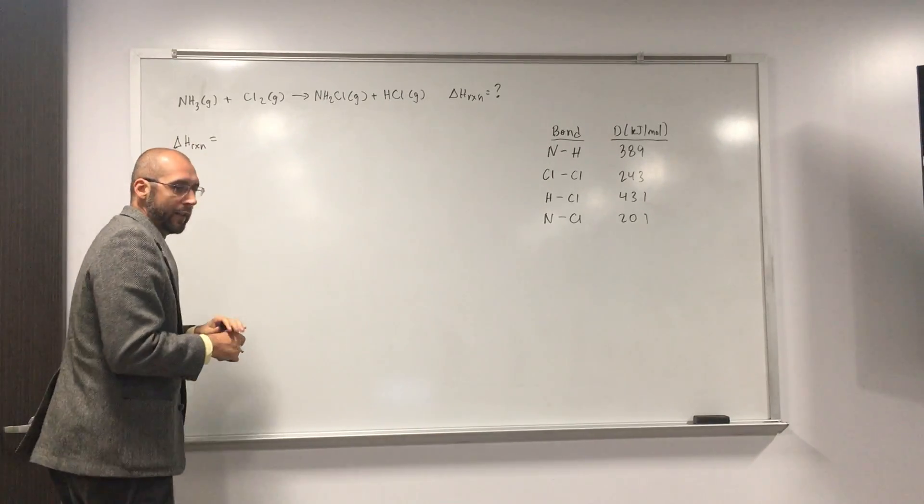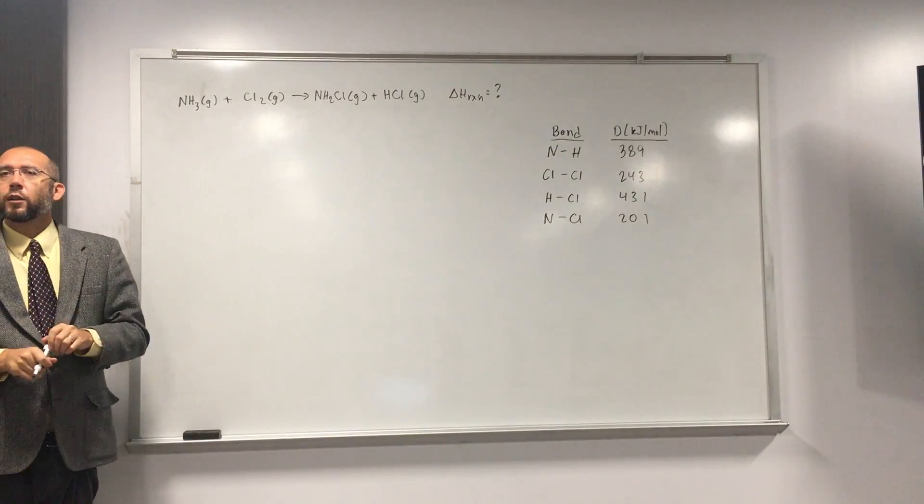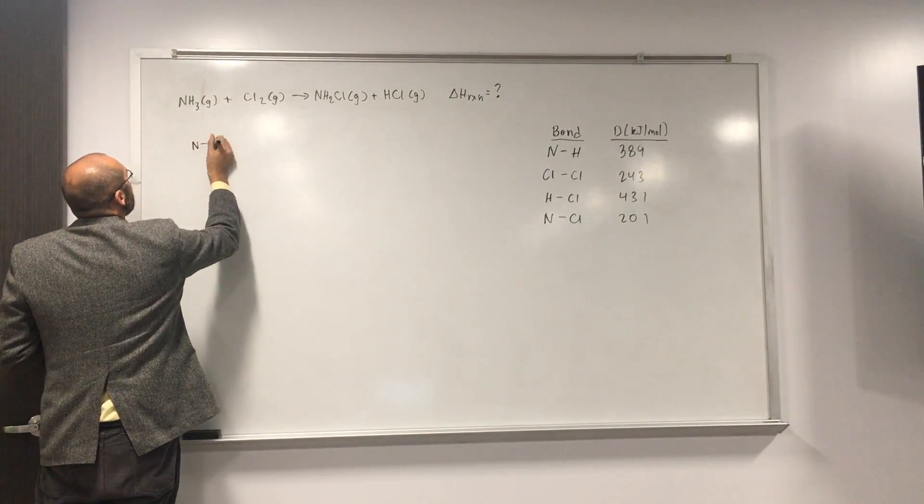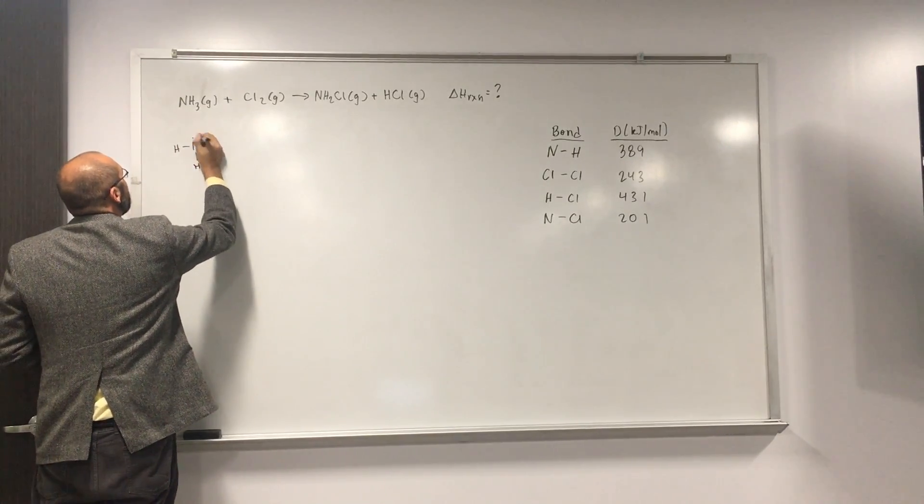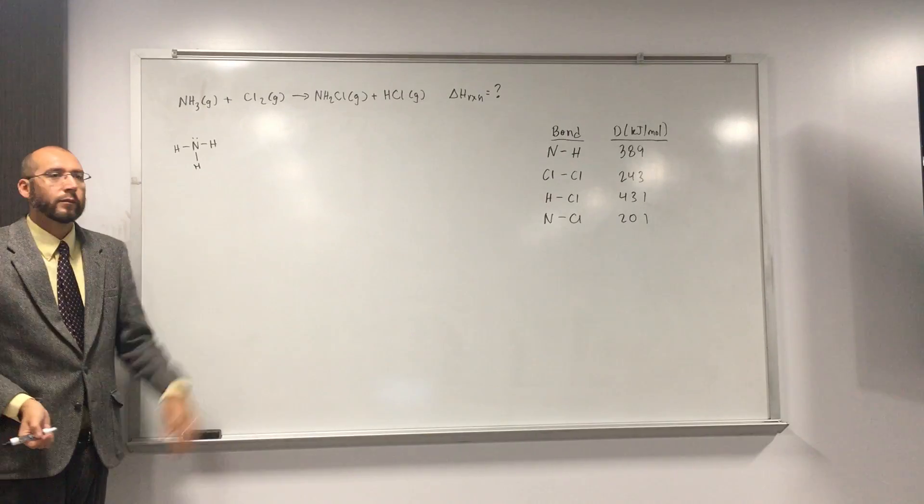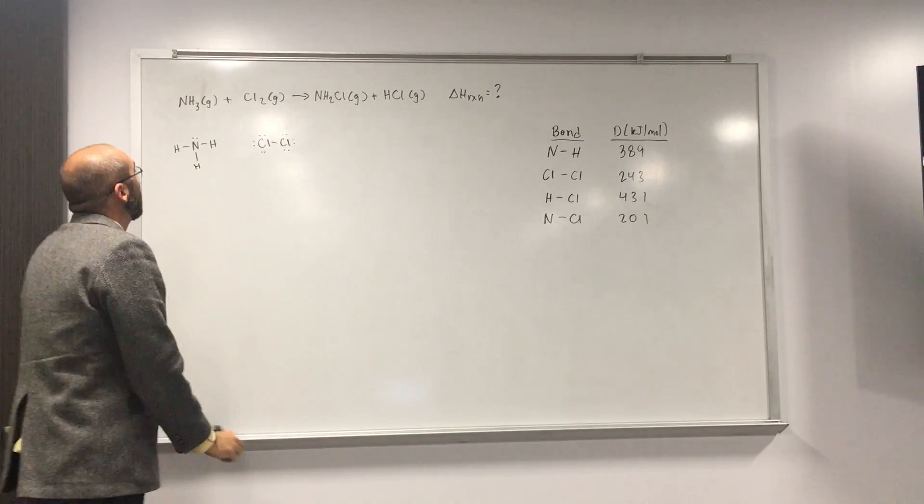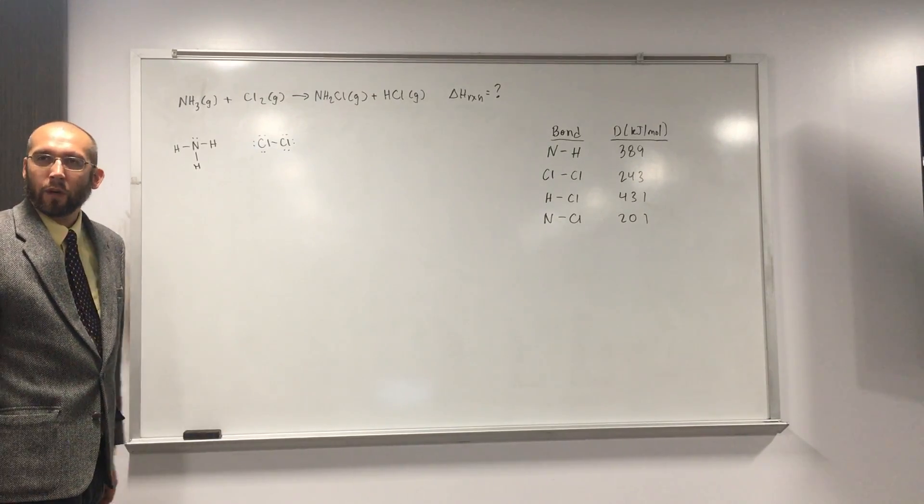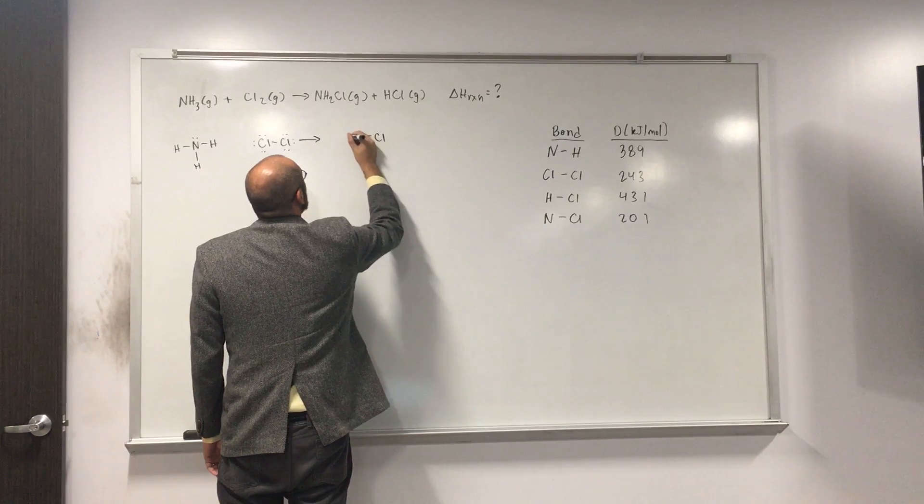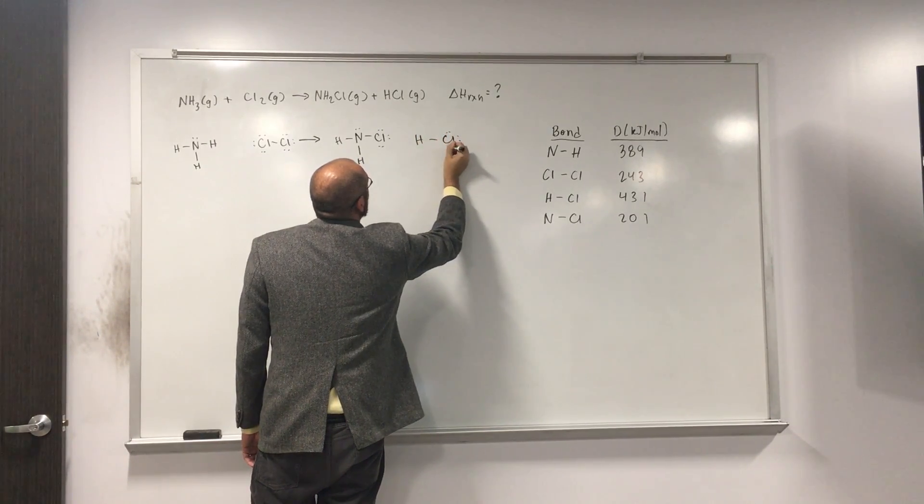So here, let's in fact, before we do it that way, since we all know VSEPR theory, it might be good to write out the Lewis structures of these so you can see which bonds are actually forming and breaking. That would be the best way to do this. So I'm not going to pressure you into giving me all the Lewis structures, but if you're having any questions with any of these, it'd be good to go back or maybe even ask during this video. For this problem, you don't necessarily need to put the lone pairs, but it's always good to remind yourself.